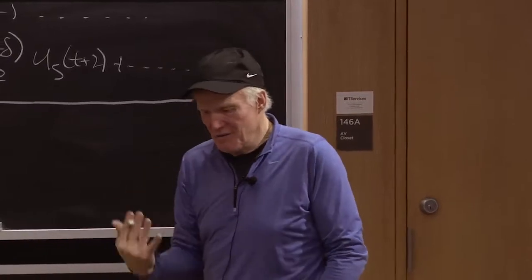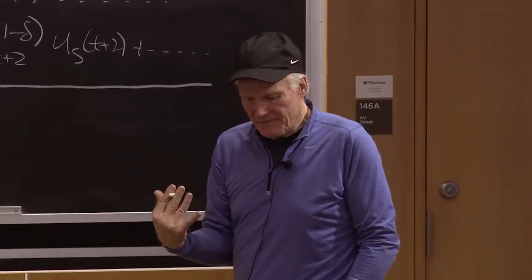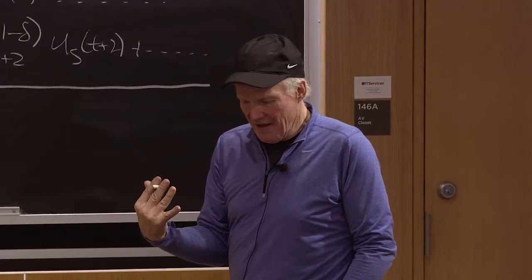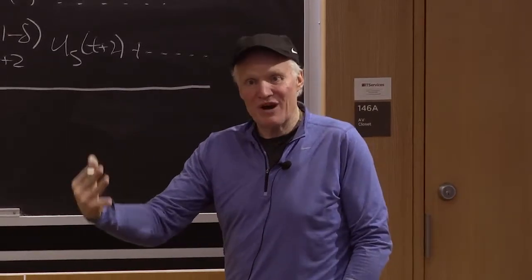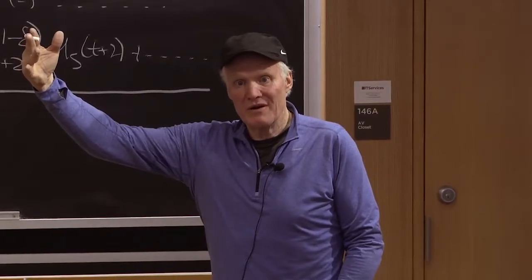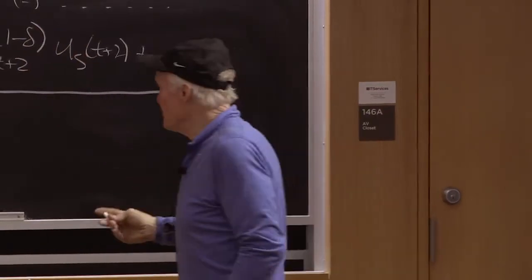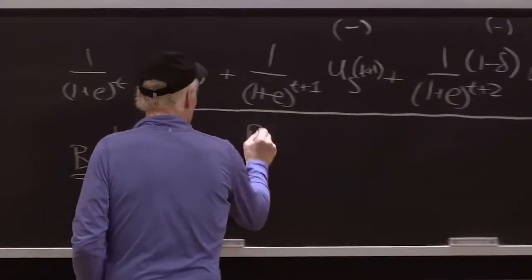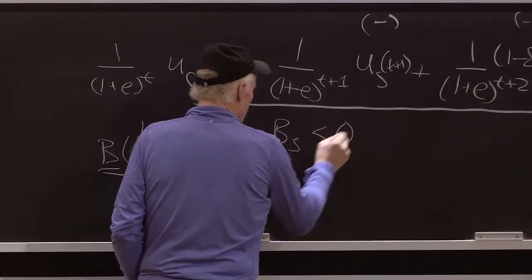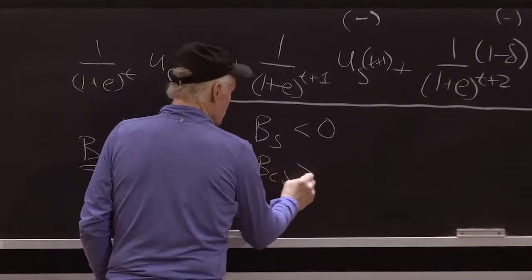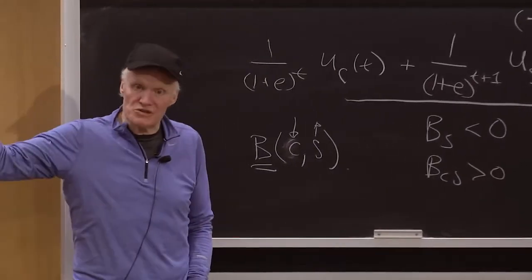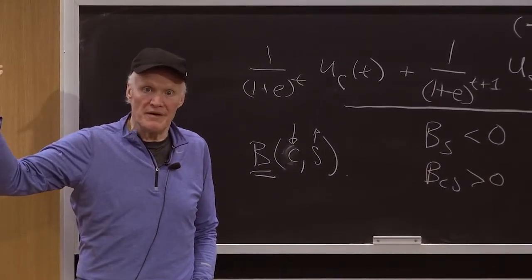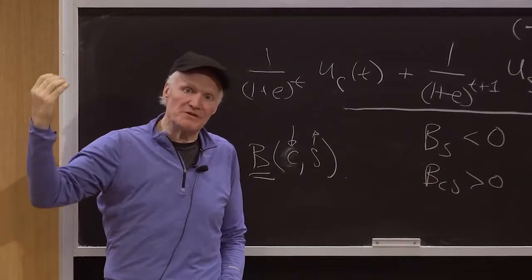I consume in the past, the more I've consumed in the past, the worse off I am. But the only way to not be so worse off is to consume even more. So you're thinking about B sub S negative, but B sub CS is positive, so that the benefit I get from consuming more goes up, so I actually consume more in equilibrium.